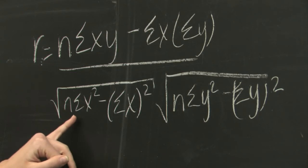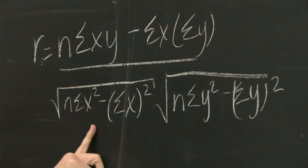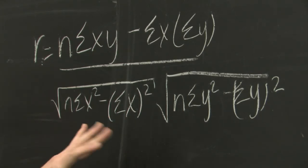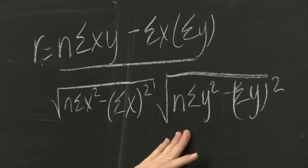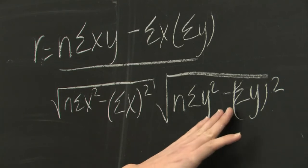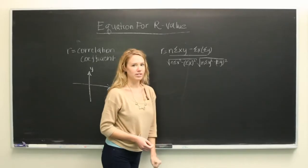of n sum of x squared minus the sum of x quantity squared multiplied by n times the sum of y squared minus, this is a summation sign, so minus the summation of y quantity squared.